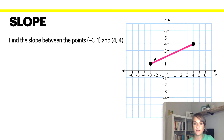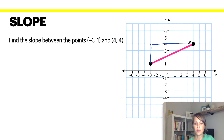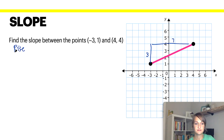One way is by graphing it. To get from one point to the other point, you're determining how far up or down you go and then how far right you go. So to get from this point to this point, you would move up three and then you would move over one, two, three, four, five, six, seven. So rise over run would give you three over seven.